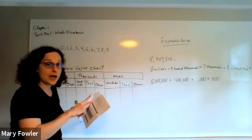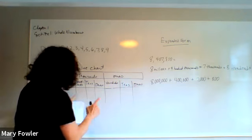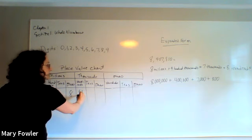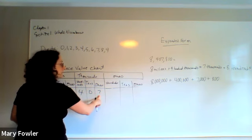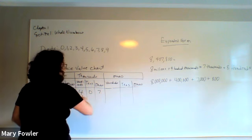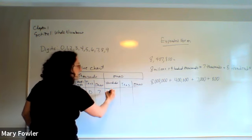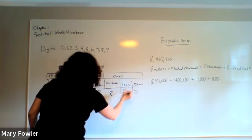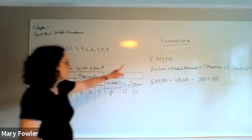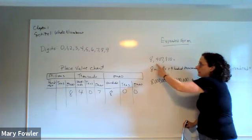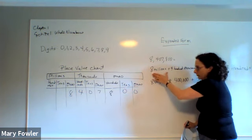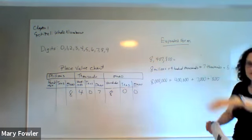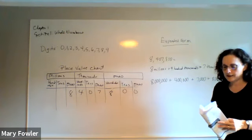And finally I'm going to come over here and write it here. So I have an eight in the millions, four in the hundred thousands, seven in the thousands, and an eight here in the hundreds. And so this eight here, because of its placement in the number, is actually eight million. A million stands for million, so that's eight millions, etc. for the rest of them.